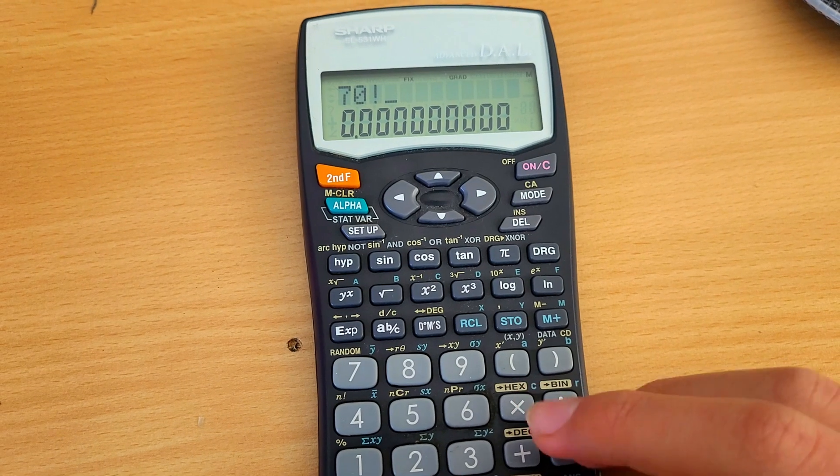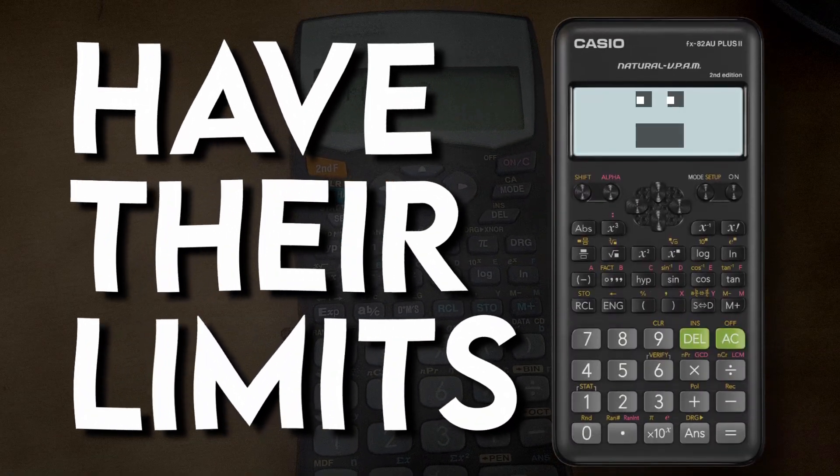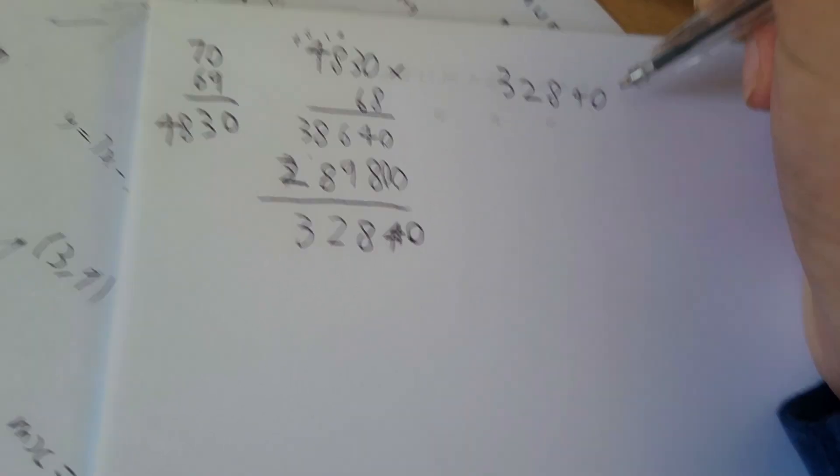My first attempt was to make the calculator give me an error. Calculators have their limits. They can't divide by zero and can't compute big numbers like 70 factorial. The problem is it's not like I could either.